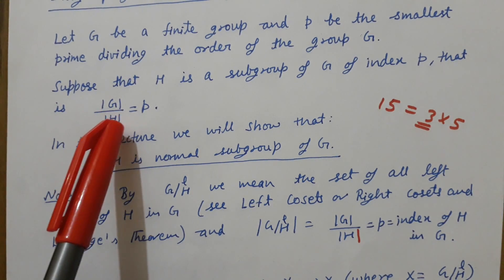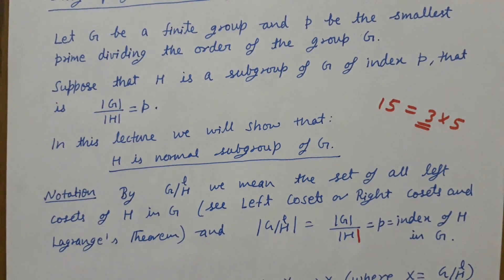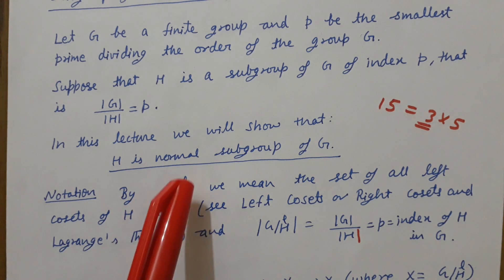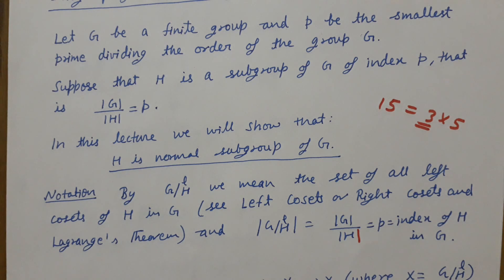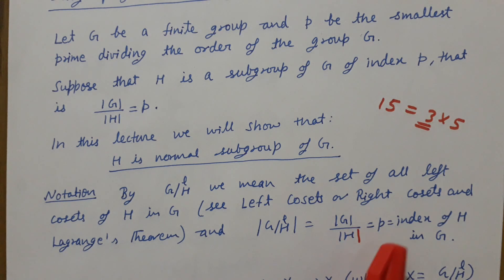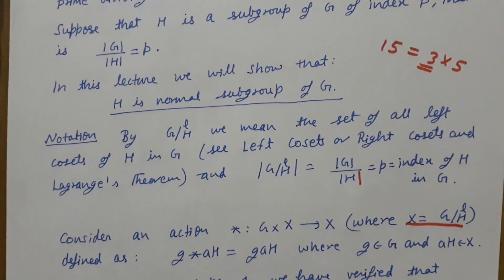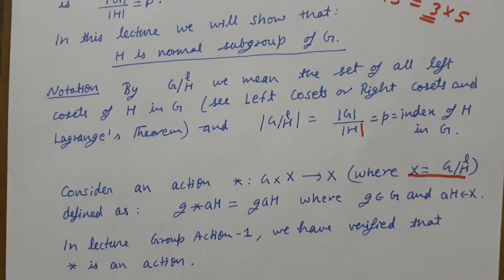G is a group and H is a subgroup of index p, meaning |G|/|H| = p. Let us fix the notation G/H_L as the set of left cosets of H in G. The number of left cosets of H in G equals the index of H in G, so this set has order p. Let us denote this set by X.